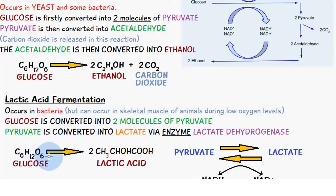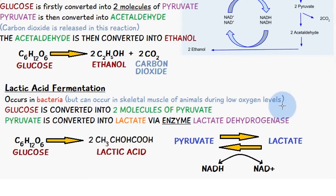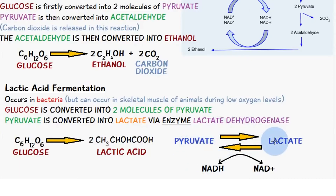Here is an equation showing lactic acid fermentation: a molecule of glucose is converted into two molecules of lactic acid. I also included the conversion of pyruvate into lactate via the enzyme lactate dehydrogenase. For this reaction to occur in the direction of pyruvate being converted into lactate, NADH is converted into NAD+. When lactate is converted back into pyruvate, NAD+ is converted into NADH.